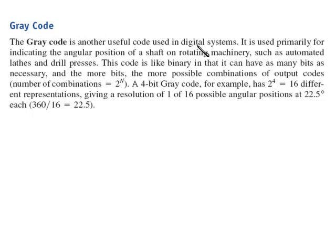This is another useful code used in digital systems. It's primarily used for indicating the angular position of a shaft on rotating machinery, such as automated lathes and drill presses. This code is like binary in that we have as many bits as necessary, and the more bits, the more possible combinations of output codes. The number of combinations is 2 to the n. A 4-bit gray code, for example, has 2 to the 4th equals 16 different representations, giving us a resolution of 1 of 16 possible angular positions at 22 degrees each, 360 divided by 16. So the resolution is not great, but in some cases that will be enough. Otherwise, you could do 2 to the 5th or 2 to the 6th for however detailed you want your resolution.